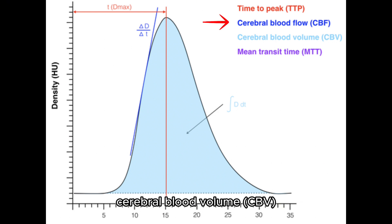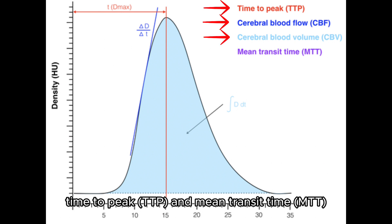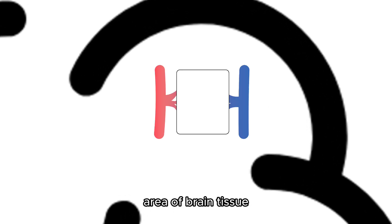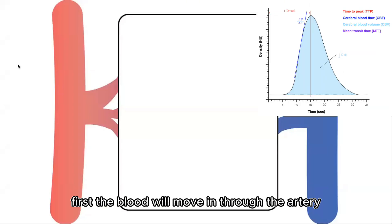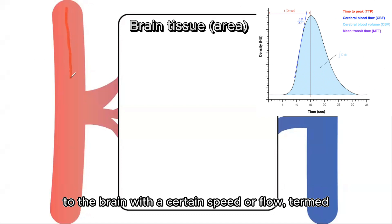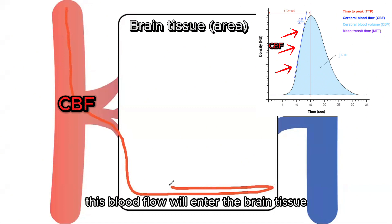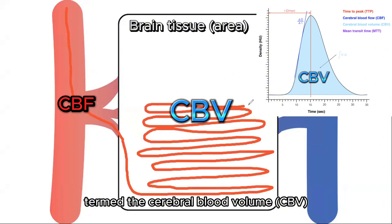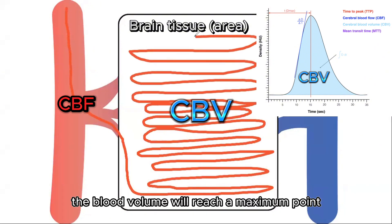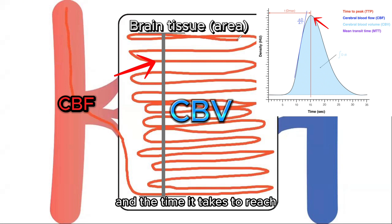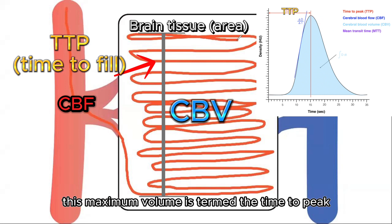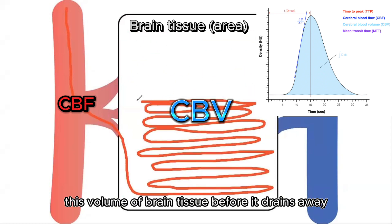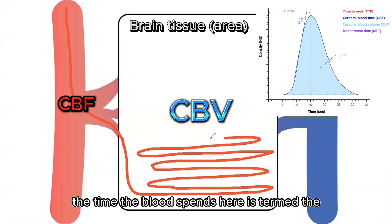The four parameters are: cerebral blood flow, cerebral blood volume, time to peak, and mean transit time. The blood moves in through the artery to the brain with a certain speed or flow — termed cerebral blood flow. This blood flow enters the brain tissue and fills up to a certain volume — termed cerebral blood volume. The blood volume reaches a maximum point before it drains away, and the time it takes to reach this maximum volume is termed time to peak. The blood also spends a certain amount of time within this volume of brain tissue before draining away, and this duration is termed the mean transit time.